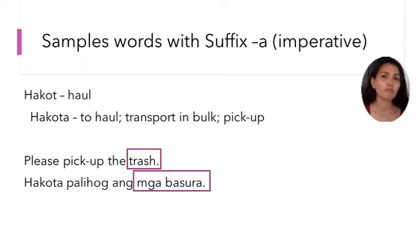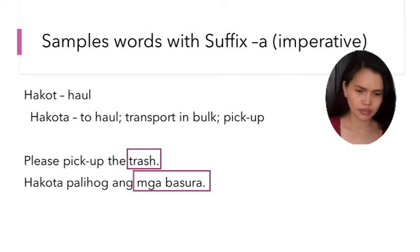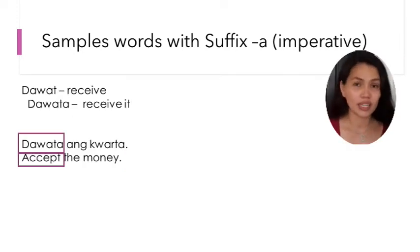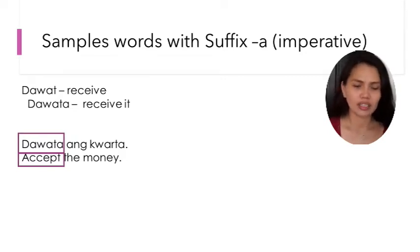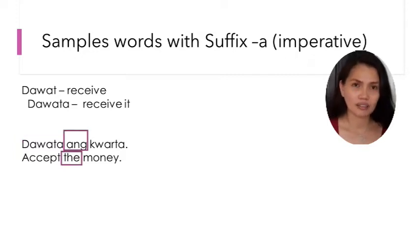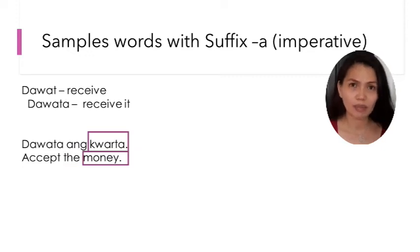'Mga basura' — to make it plural, you add 'mga.' Dawat means receive. 'Dawata' means receive it or accept it. Example: 'Dawata ang kwarta' — accept the money. 'Ang' means the, 'kwarta' means money. So 'Dawata ang kwarta' means accept the money or receive the money.